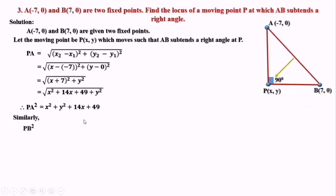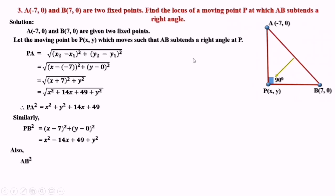Similarly we calculate PB² using the distance formula, with x1, y1 as P(x, y) and x2, y2 as B(7, 0). On simplification we have PB² = x² + y² - 14x + 49. We can also calculate AB² using the distance formula: 14² = 196. Now we have expressions for PA², PB², and AB².